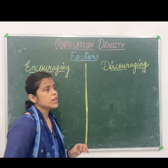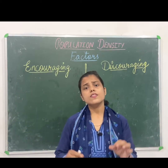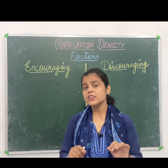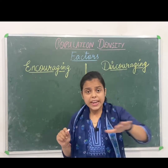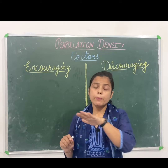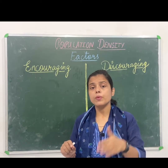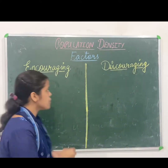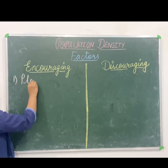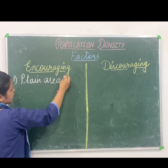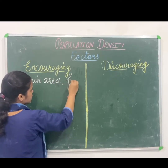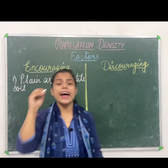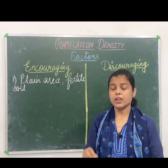So the first encouraging factor is land — specifically fertile land and plain area, not rugged land. We live in a plain area like Uttar Pradesh, which is a plain area. So the first encouraging factor is plain area or fertile soil.